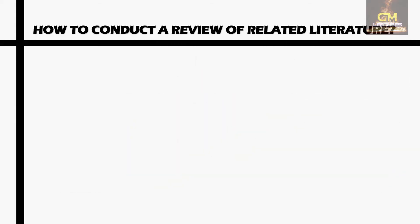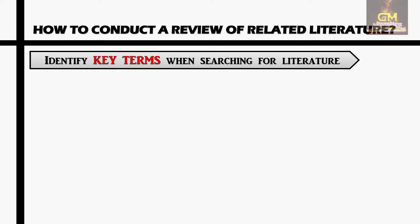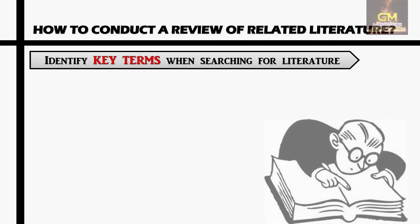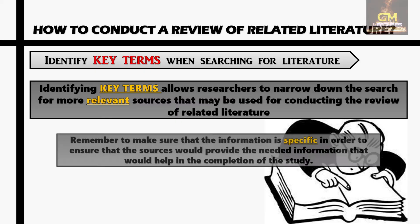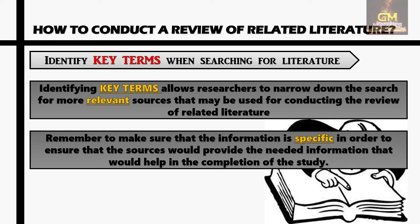Let's focus on the first step: identifying key terms when searching for literature. Identifying key terms allows researchers to narrow down the search for more relevant sources that may be used for conducting the review of related literature. We have to make sure that the information is specific in order to ensure that the sources would provide the needed information that would help in the completion of the study.